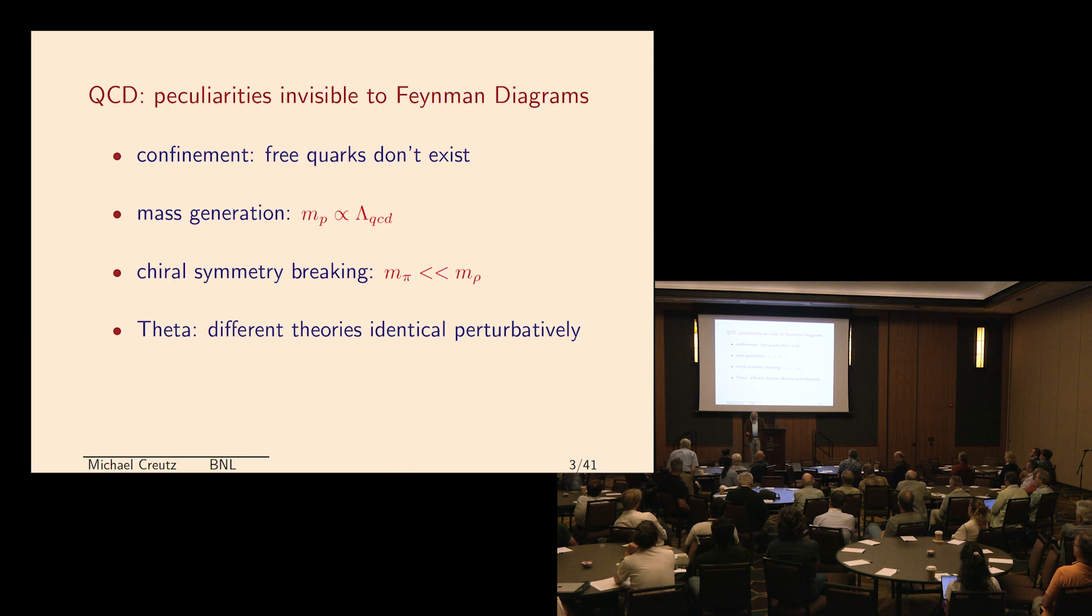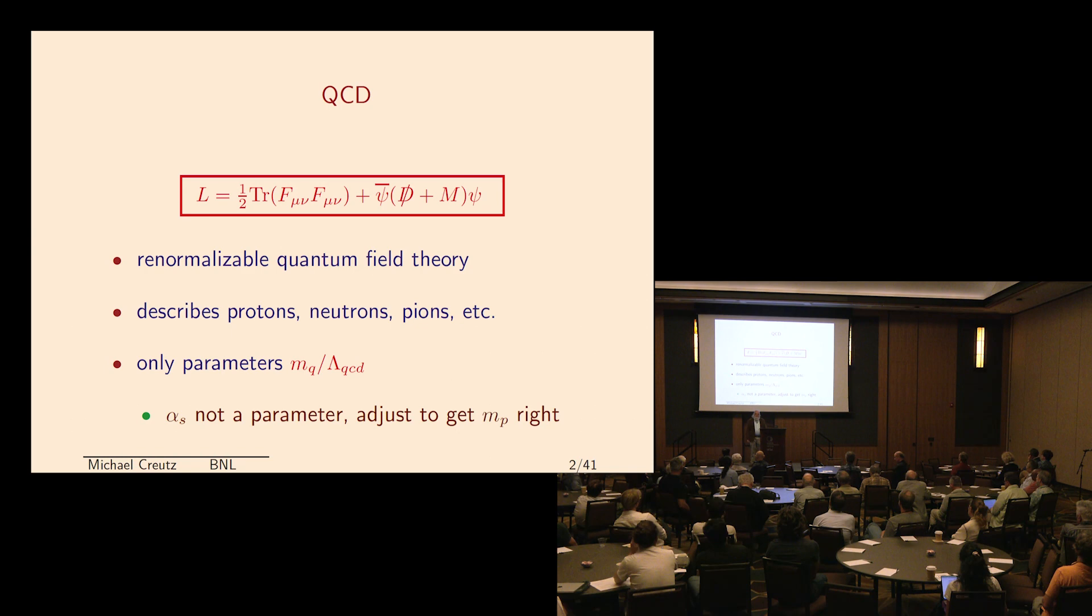The only parameters are the masses of the quarks, and we don't understand where they come from. But things like the strong coupling constant are not really a parameter. What you do is you put in a cutoff in your theory, and I'll go into this in more detail. Get some physical particle right, like the proton. And if you get the proton mass right, then you just remove your cutoff, holding that fixed. And the only thing left over are the quark masses.